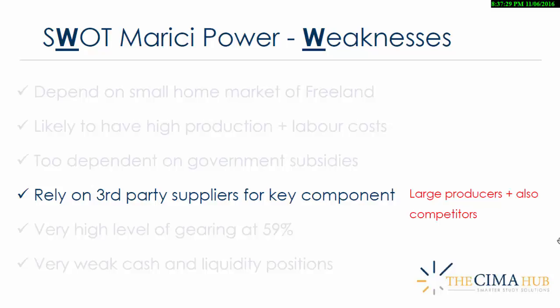The next weakness is that they rely on third-party suppliers for a key component: polysilicon. We're told in the pre-seen that the price of polysilicon is very volatile — it really fluctuates wildly. The suppliers of this key component tend to be very large and are themselves involved in the production of solar panels. So not only are they suppliers, they're also competitors, which means they're unlikely to want to cut Marici any kind of favorable terms.